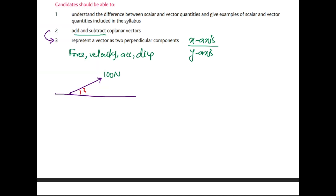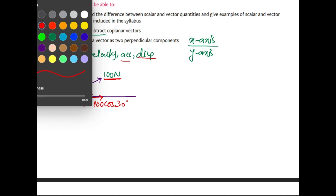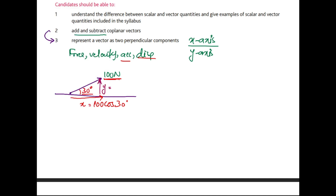Let's say the angle is given as 30 degrees. We apply trigonometric ratios and find that the base component along the x-axis equals the magnitude — say 100 newtons, 5 m/s, 10 m/s², or 300 m — multiplied by cosine of 30 degrees. The y-axis component equals that same magnitude multiplied by sine of 30 degrees. You can use simple trigonometry since the hypotenuse is 100, to arrive at these values.